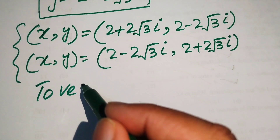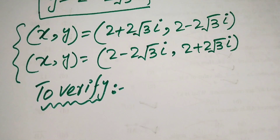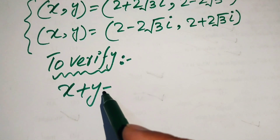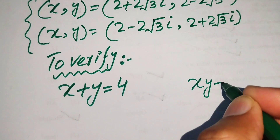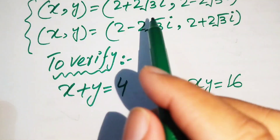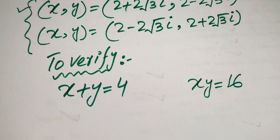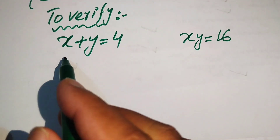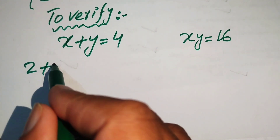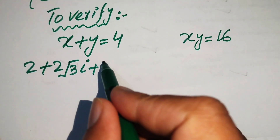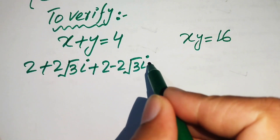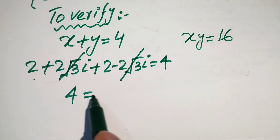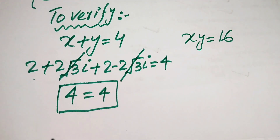We now verify these solutions satisfy the original equations. For equation one, x + y: (2 + 2√3·i) + (2 − 2√3·i). The imaginary terms cancel, and 2 + 2 = 4, which equals 4. The first equation is satisfied.